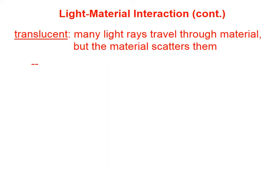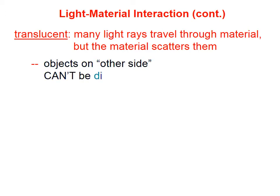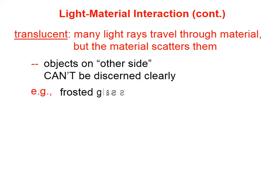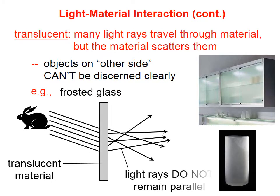If a material is translucent, that means that many light rays travel through the material, but the material scatters them. In other words, objects on the other side can't be discerned very clearly. Frosted glass is a great example of a translucent material.